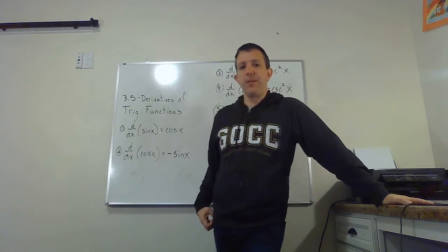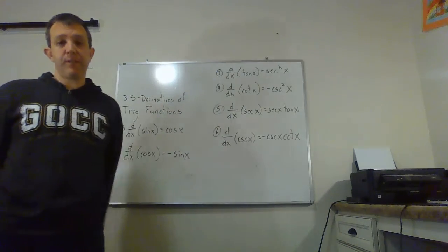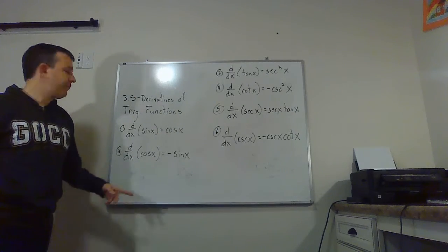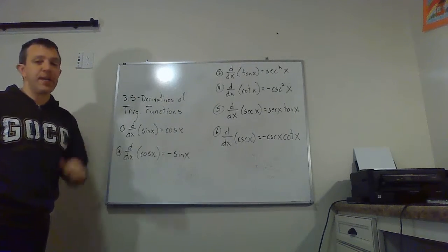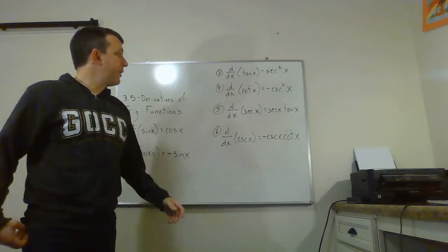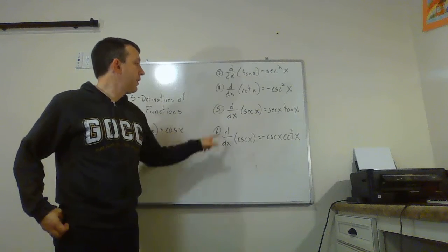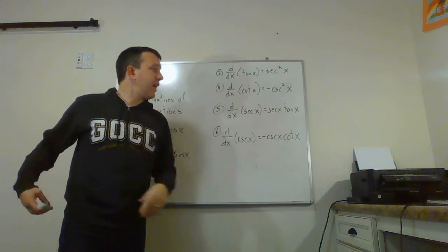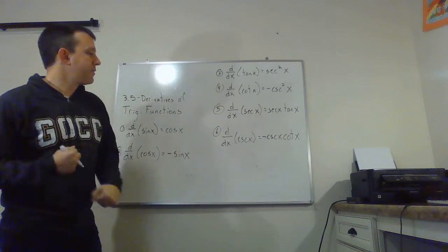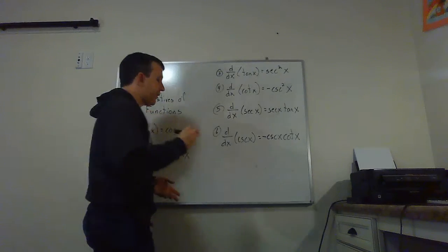Here they are — all six are also in your book. The derivative of sine is equal to cosine. The derivative of cosine is equal to negative sine. The derivative of tangent is secant squared. The derivative of cotangent is negative cosecant squared. The derivative of secant is secant x times tangent x, and the derivative of cosecant x is negative cosecant x cotangent x.